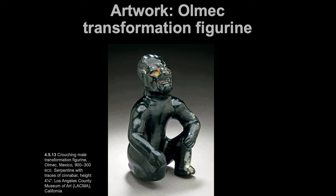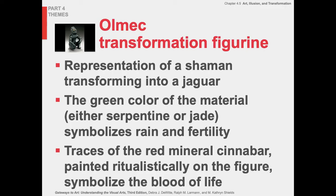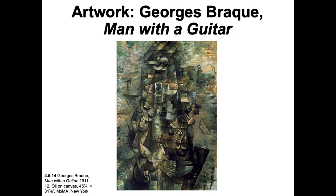Another example: this crouching male transformation figure is about 2,500 to 3,000 years old, made of serpentine or perhaps jade — a greenish stone — with some cinnabar painted throughout. Stone doesn't hold paint well, especially polished stone. It's only four and a half inches, small enough to be handheld by a medicine man. It depicts a shaman transforming into a jaguar, so it would have a ritualistic meaning — held in the shaman's hand during the ritual. It also symbolizes rain and fertility.